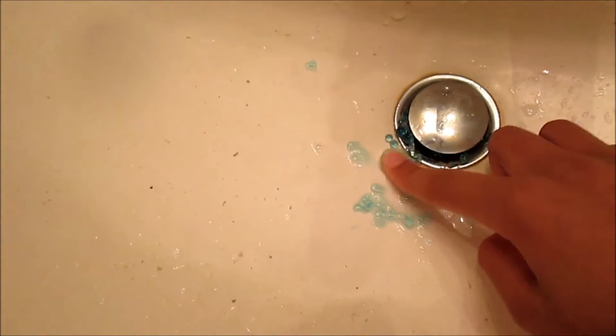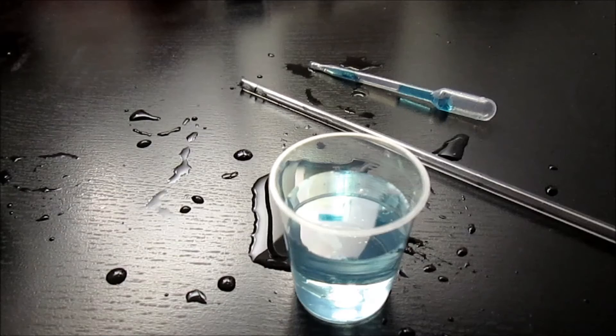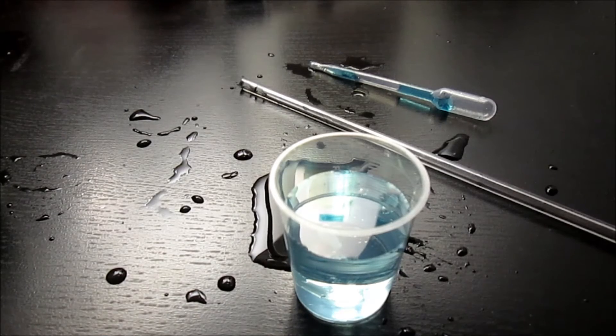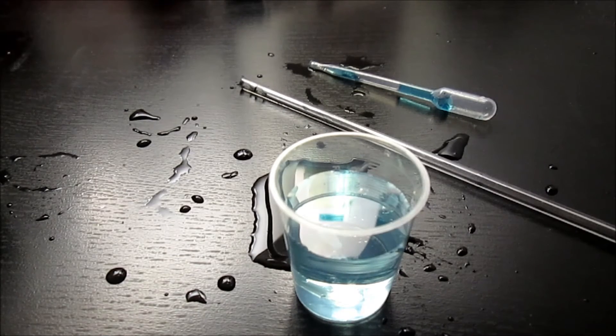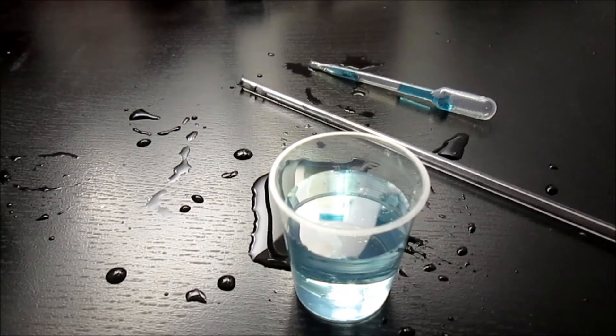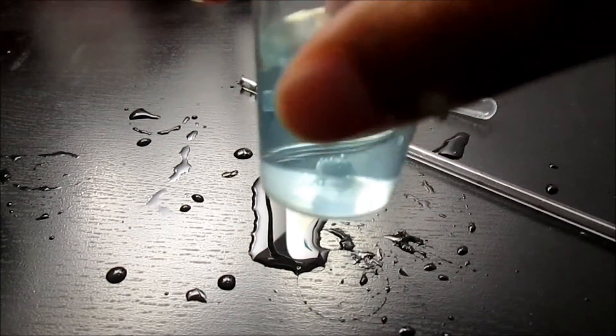It feels like those poppy things you can get in iced tea. So here I diluted the sodium alginate in even more water, and then I put one little bead of calcium chloride. Let's see what happens.